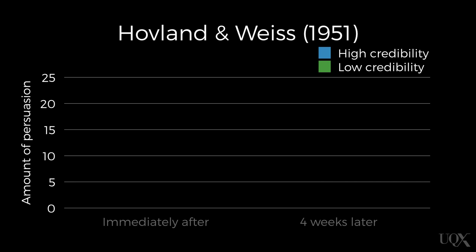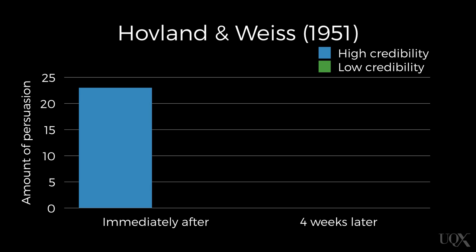The larger numbers are indicating a greater extent of persuasion. On the x-axis, you can see the two times that participants were asked about the practicality of building a nuclear-powered submarine — immediately after the message was presented and four weeks later. The blue bars refer to those who thought the message came from a source high in credibility, and the green bars refer to those who thought the message came from a source low in credibility.